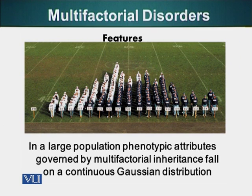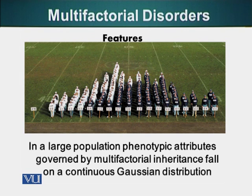Multifactorial disorders are governed by a Gaussian distribution. Here on the screen you can see a group of people arranged in a specific way — they are arranged according to their height. If you collect 1000 people at random and categorize them, you make them stand in lines according to their height.